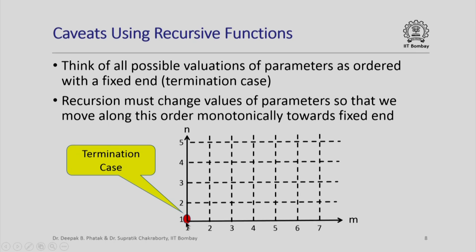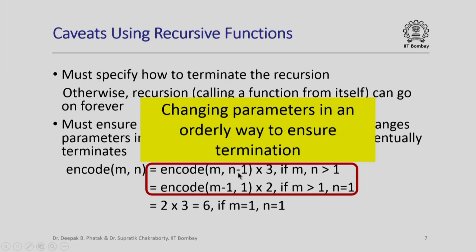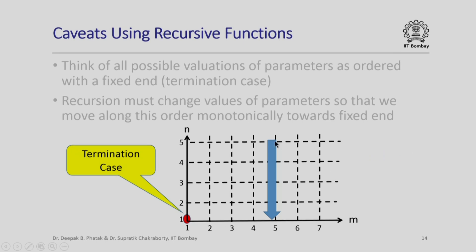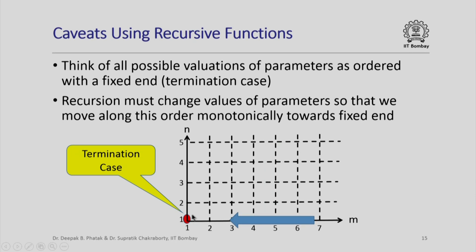The grid point (1,1) constitutes the termination case — when we are there, the recursion terminates. If we are trying to compute encode(4,3), we are at that grid point. Since both m and n are greater than 1, we first decrement n, moving to (4,2), then to (4,1). Once n equals 1, we decrement m, moving to (3,1), then (2,1), and finally (1,1) — at which point we have terminated. We systematically move down in the n direction and then horizontally toward (1,1), and no matter which grid point you start from, this process always terminates.